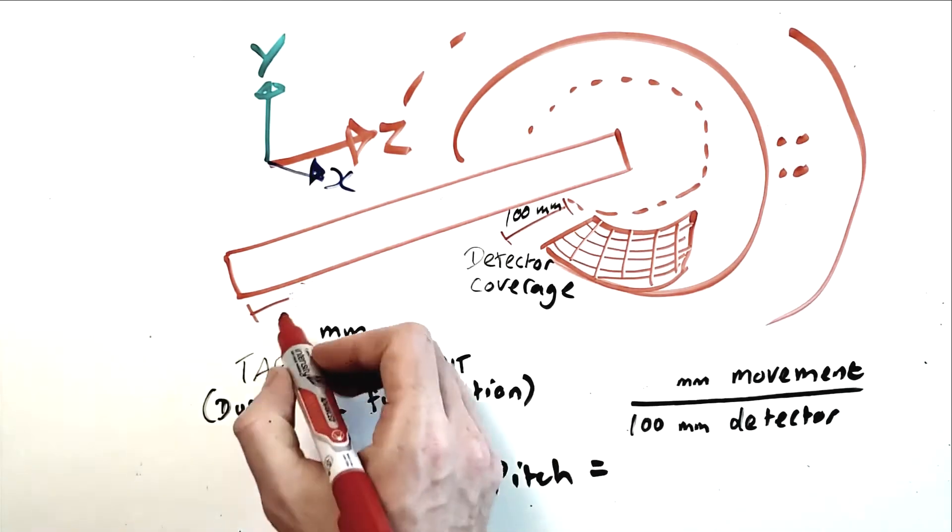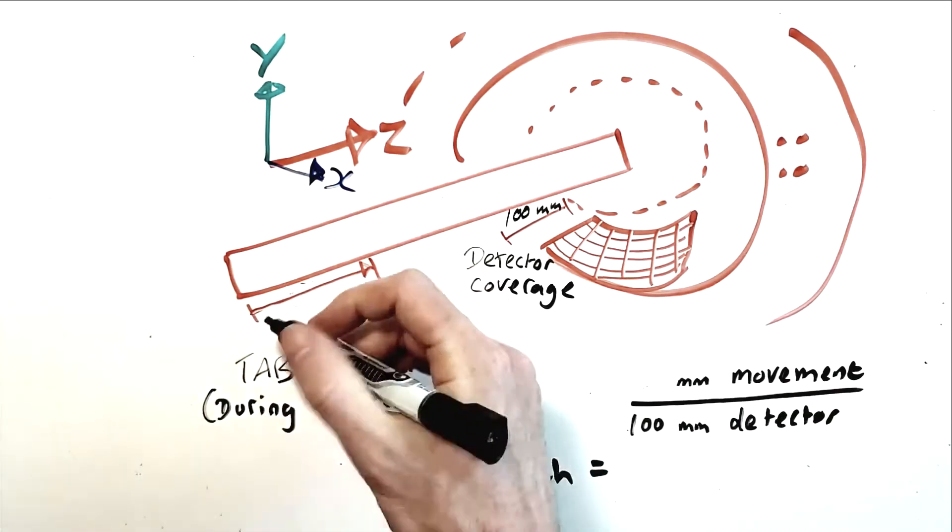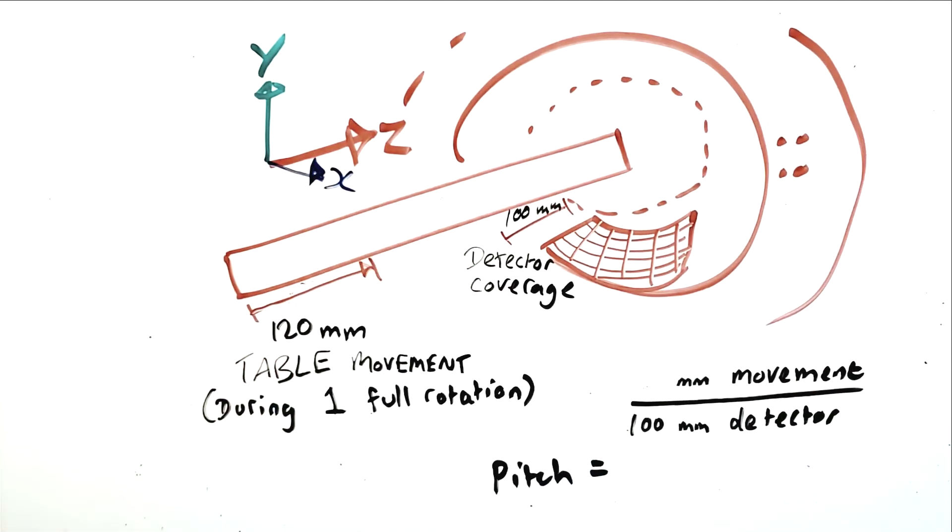On the flip side, if your table moves 120mm in one rotation, and the detector only covers 100mm of length in the z-axis, your pitch factor would be 1.2. The table is moving faster relative to the rate of z-axis detector coverage.